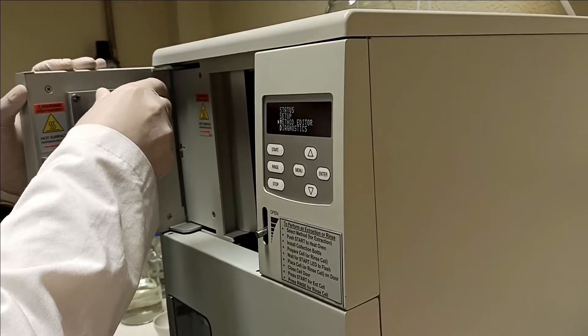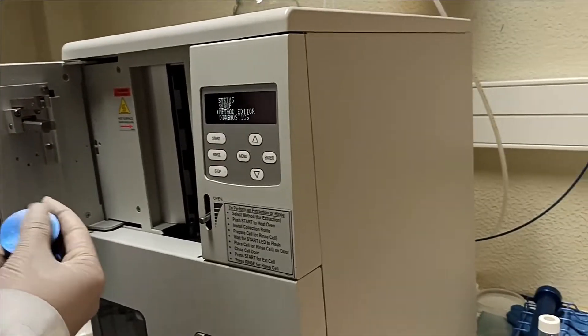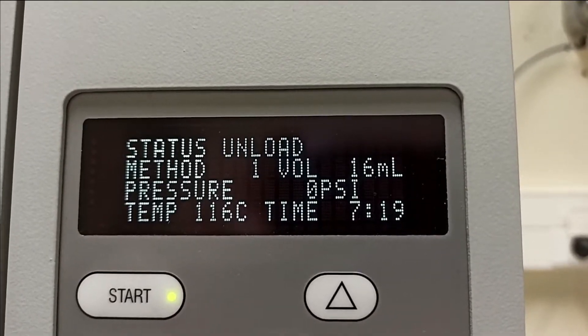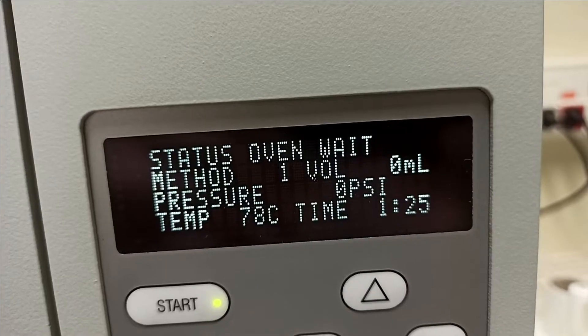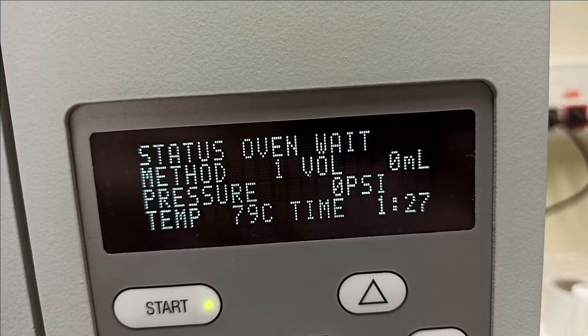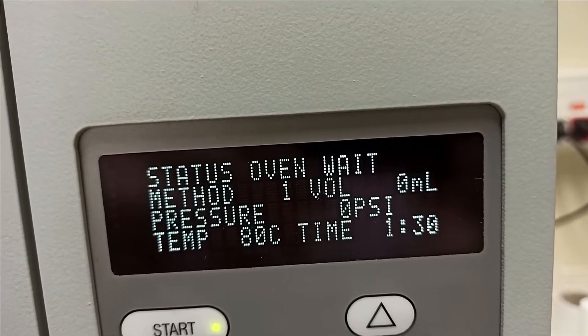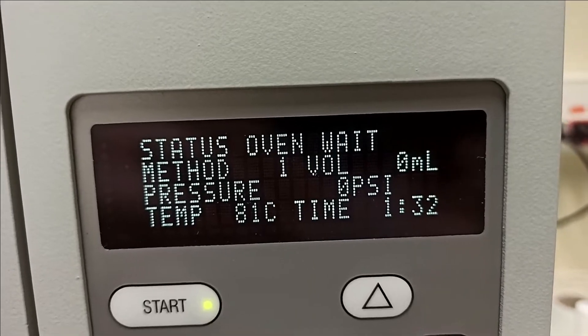Now open the chamber and take out the rinse cell. You can now start the program for the first cycle. The oven will now heat up to 120 degrees, which is the temperature that we have selected, so it might take a while.